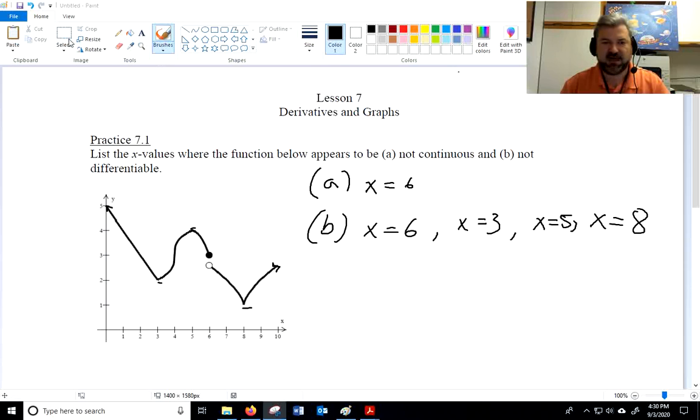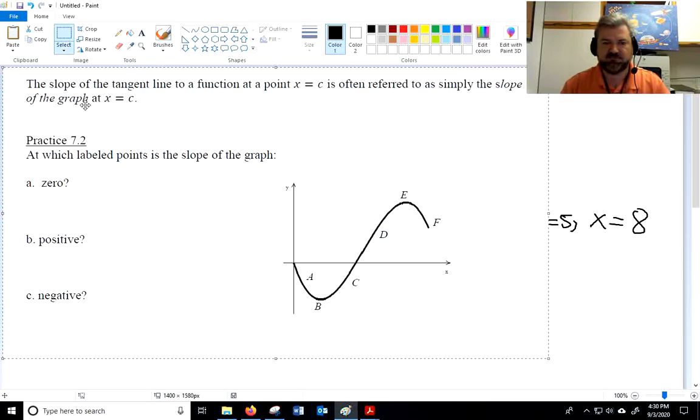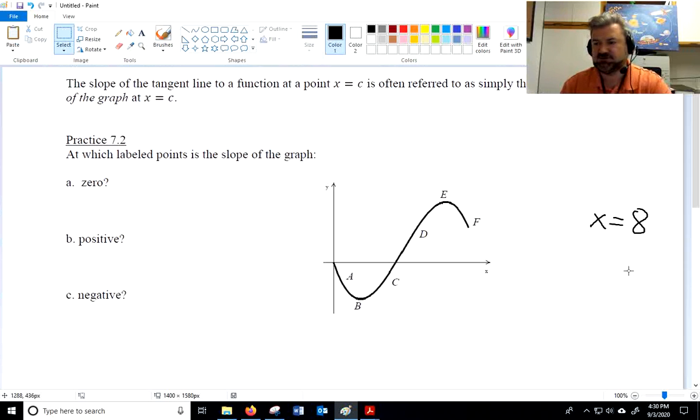We got another, yet another practice problem for you to accomplish. The slope of the tangent line to a function at a point x equals c is simply referred to as the slope of the graph at c. I kind of find that a little bit sloppy. We think of lines as having slope, but we'll say a graph has a slope. We'll say, what's the slope of the graph there? What we really mean, I think, is the slope of the tangent line there. But with that in mind, let's answer these questions. At which level points is the slope of the graph 0, positive, or negative? Give it a try.